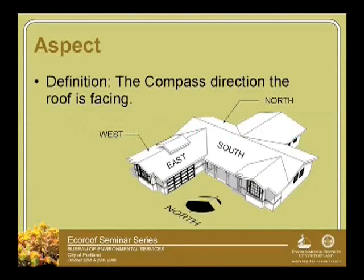The first topic is aspect and its effect on your eco-roof. Aspect is the compass direction the roof is facing. In the diagram here we've got a south-facing aspect on this roof, so most of the solar gain is going to happen right here. We've got a west, which is going to be a pretty hot area as well. And then your east and your north side of the building or the rooftop.